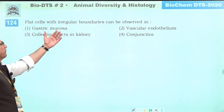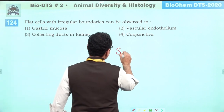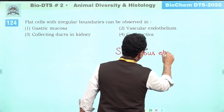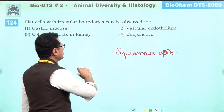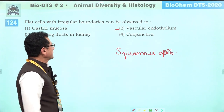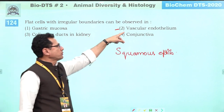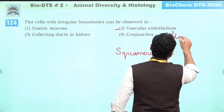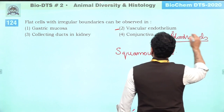Flat cells with irregular cell boundaries are squamous epithelium. These are present in the inner lining of blood vessels — called vascular endothelium. Answer is two.